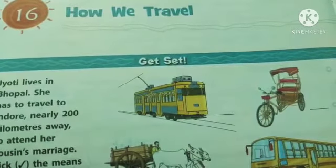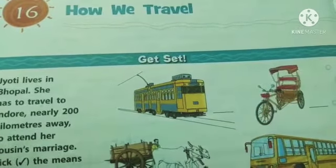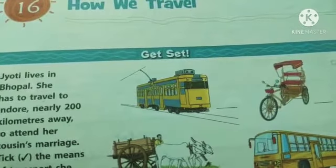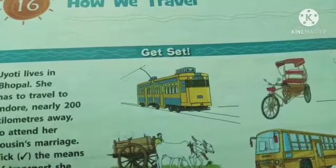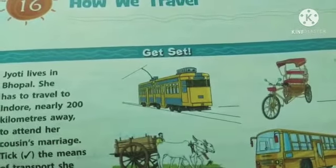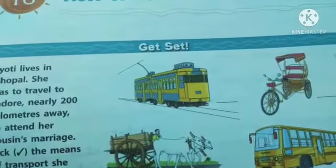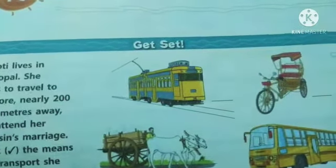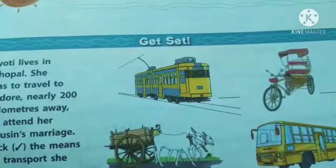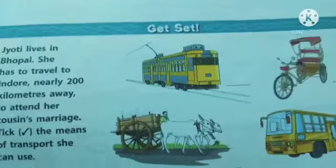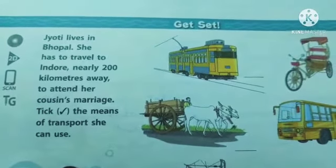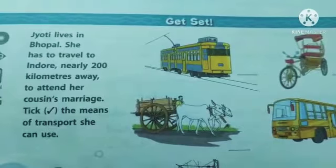Means of transport are not used the same way for every place. We may use a bus to go somewhere while we use a train to go somewhere else. There are different types of means of transport, and vehicles are chosen based on the location of the place, the distance to be covered, the time available, and the money that can be spent.